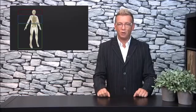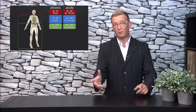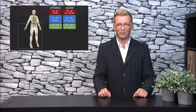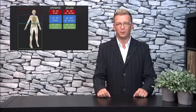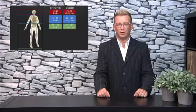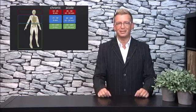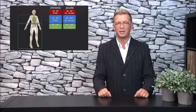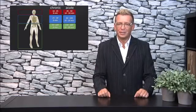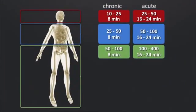Coming back to our chart, for the local application — for the pillow or the pad — you just follow the instruction on the chart. This chart can also be downloaded below the video. Download it on your computer, print it out, and have it on file somewhere in case you forget about the settings of Wolfie's Law. For the head-neck area, if you suffer from something chronic — meaning it's an older issue — you start with the pillow or the probe in the head-neck area with an intensity of 10, or possibly up to 25, for 8 minutes.